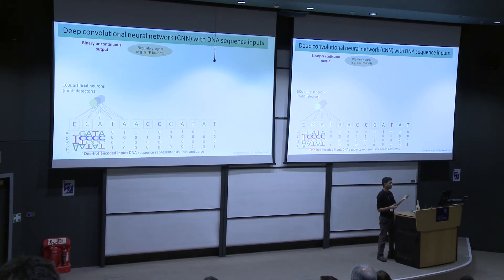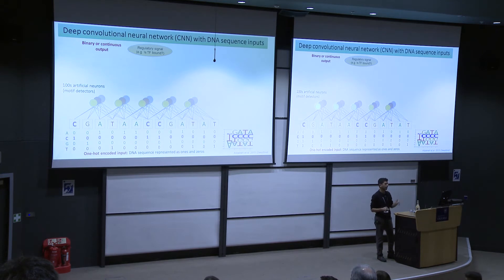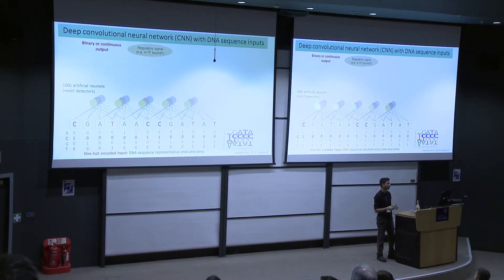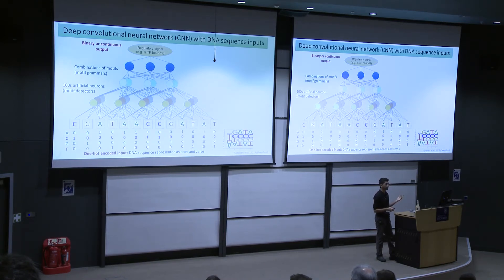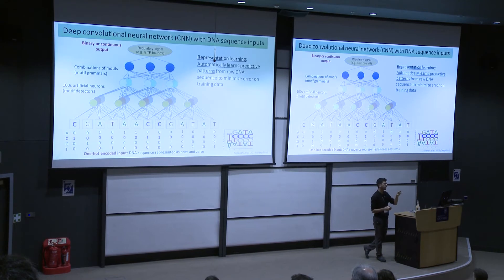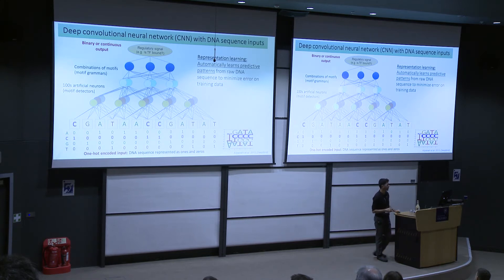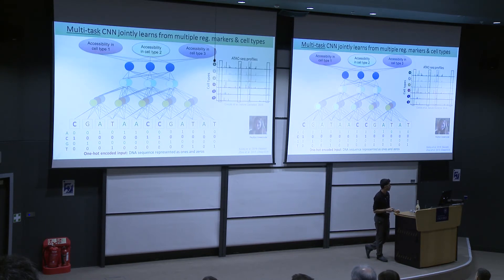Any particular motif could exist anywhere in the sequence, so you typically take these neurons and scan the sequence using a convolutional operation. In the first layer of the neural network, you have several hundred neurons, each trying to learn a motif detector. The key idea is you can stack these neurons one on top of the other, and each layer learns combinatorially more complex patterns. The final layer is in fact a logistic or linear regression — pattern discovery followed by classification. The key point is the ability of these models to learn powerful representations from data without making specific assumptions about what features they might have.